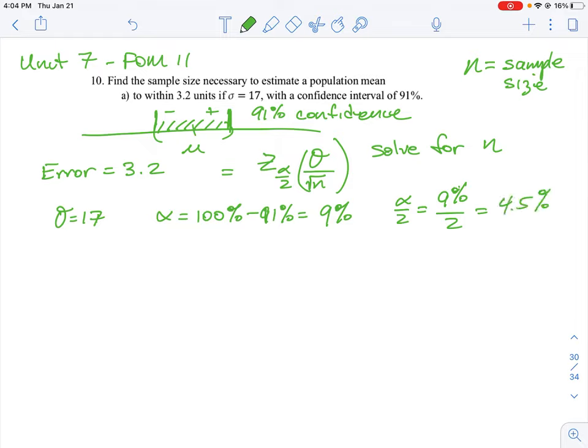The alpha divided by 2 value equals the 9% split in half, which is 4.5%. That means at the top end we take off 4.5% and at the bottom end we take off 4.5%. We need to convert that to our z scores.